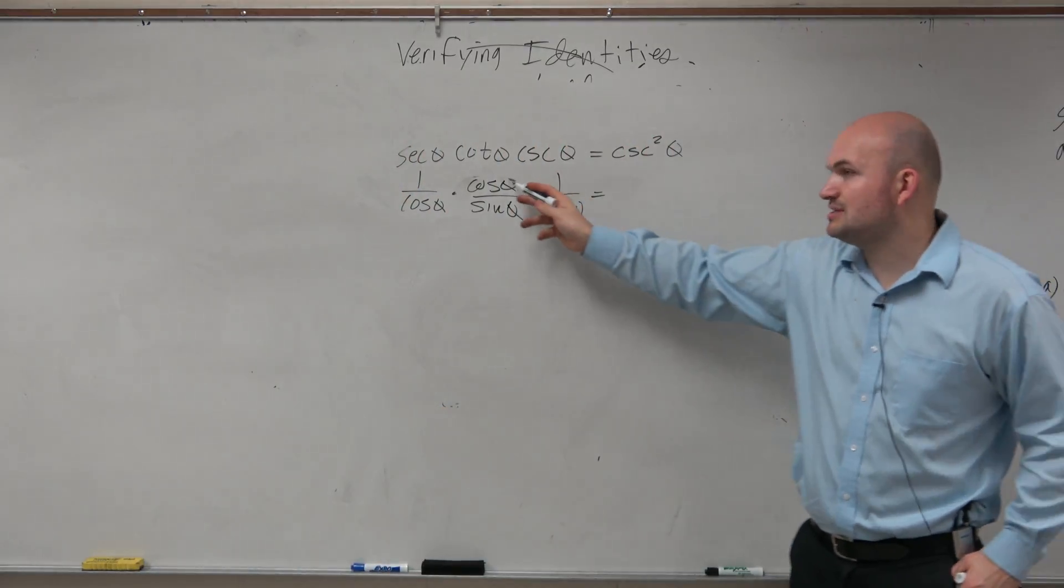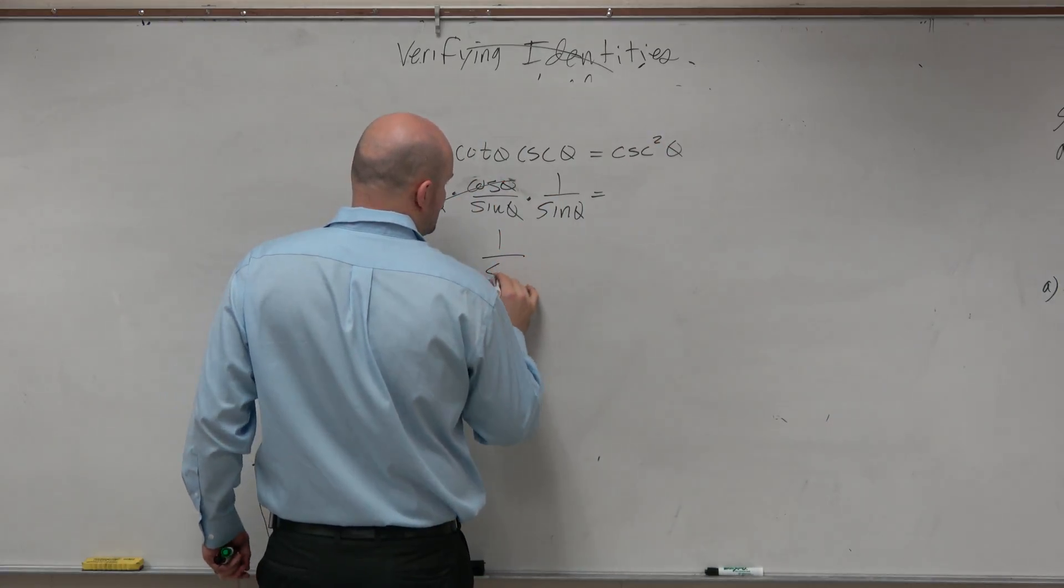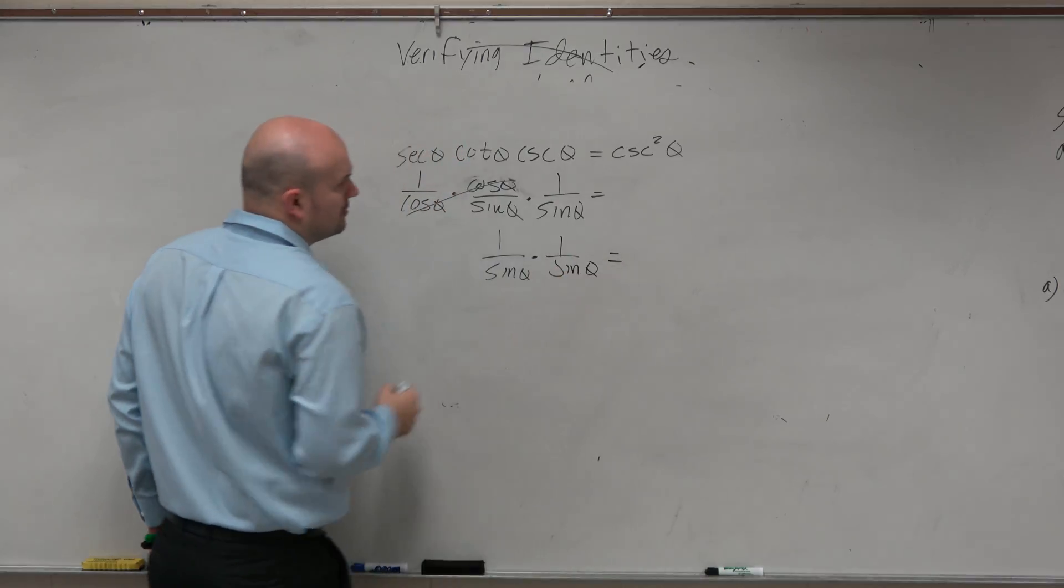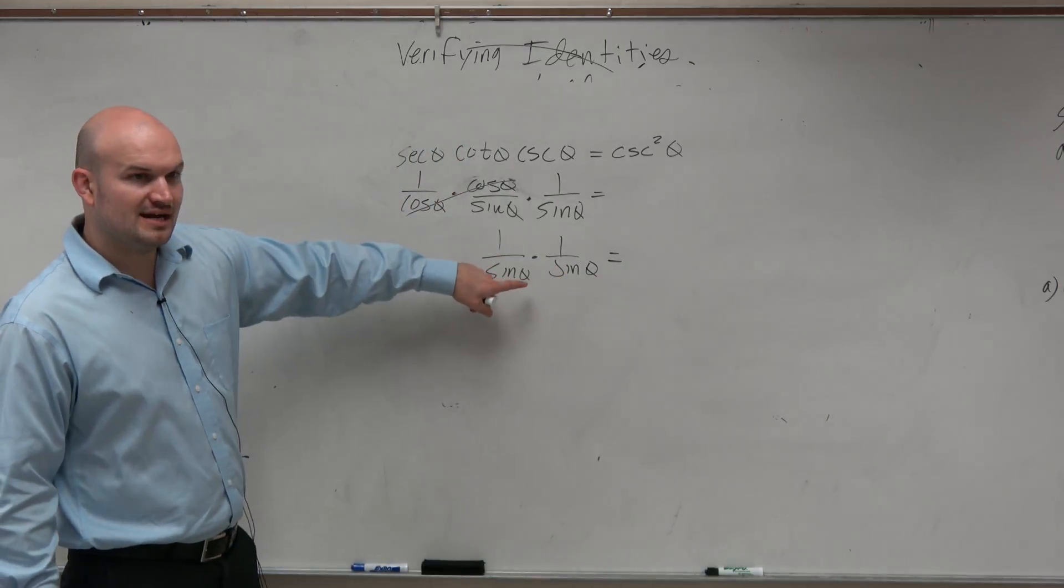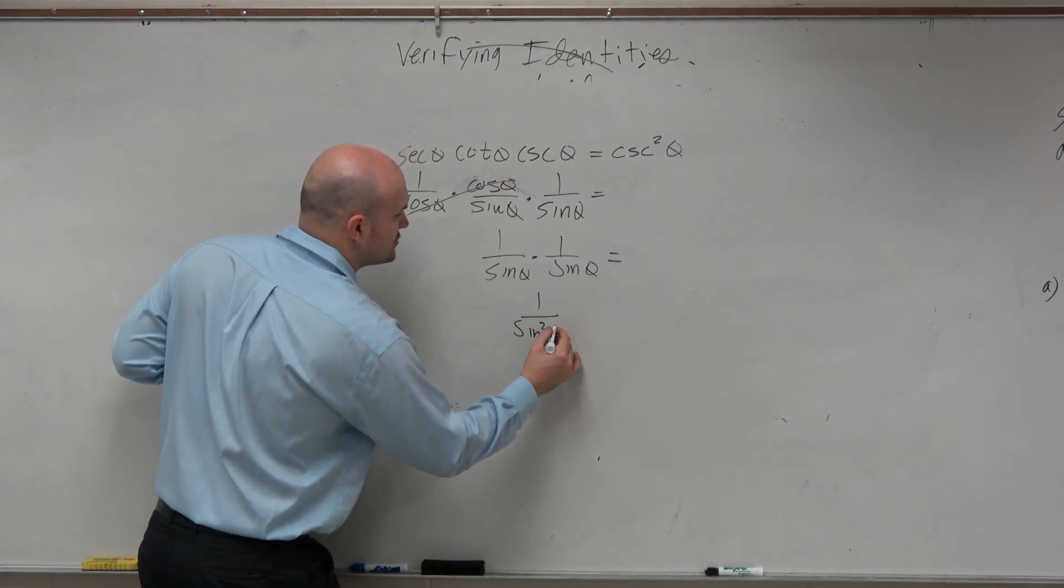Now, I have a cosine in the numerator, cosine in the denominator. Here, that's 1 over sine of theta times 1 over sine of theta. 1 over sine of theta over 1 over sine of theta is 1 over sine squared of theta.